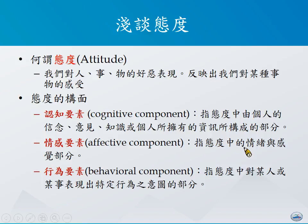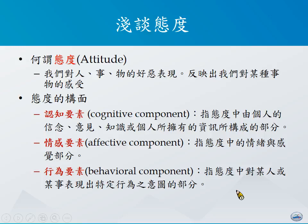态度也可以分成情感的要素，泛指态度中隐藏的情绪或感觉部分。最后则是态度的行为要素，泛指某人对某人或某件事所表现出来的特定行为意图。例如，「我觉得旁边没有车时闯红灯没什么了不起」，这就是一种行为要素的态度。